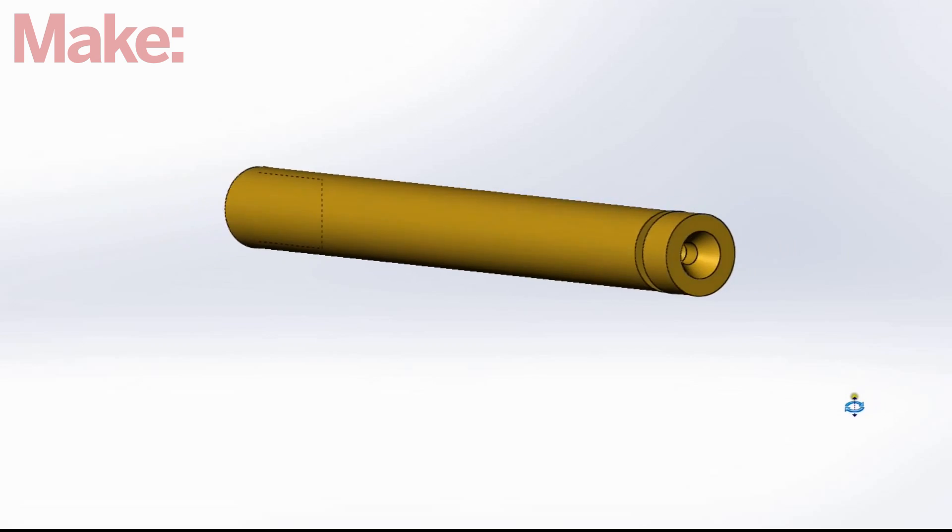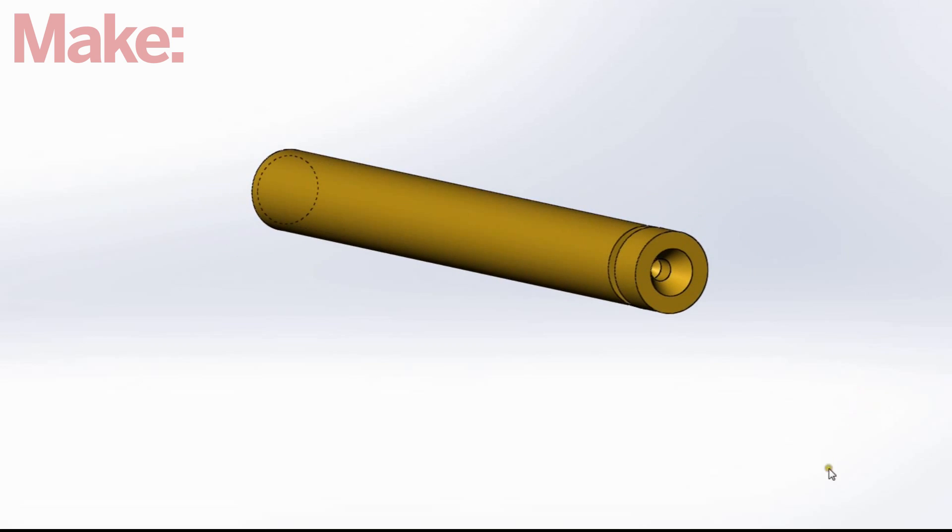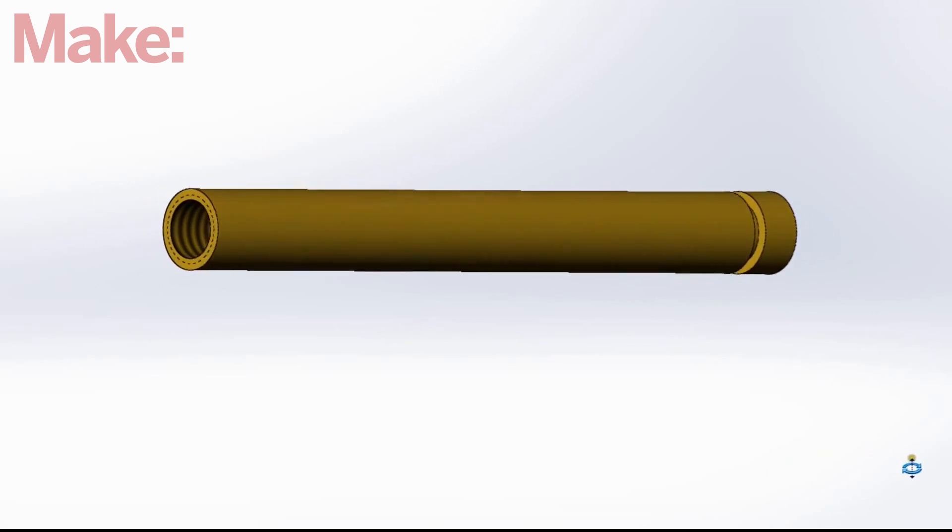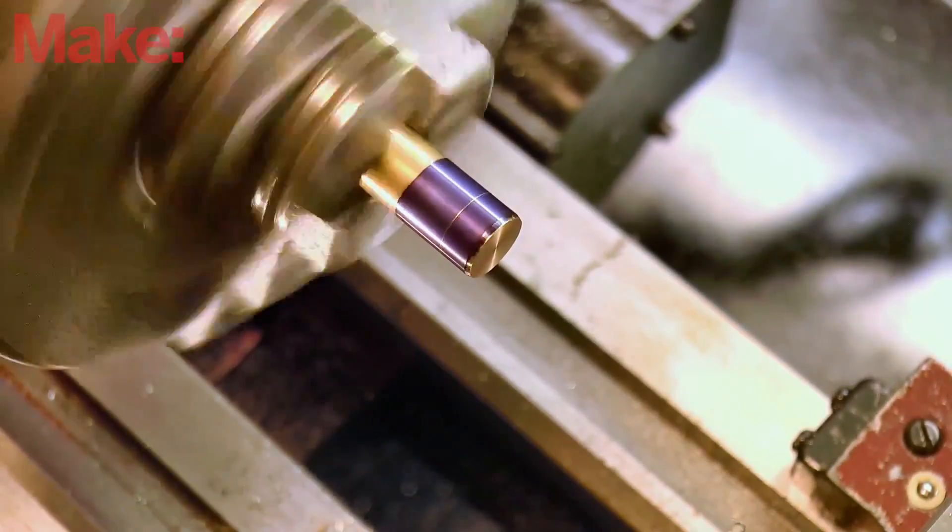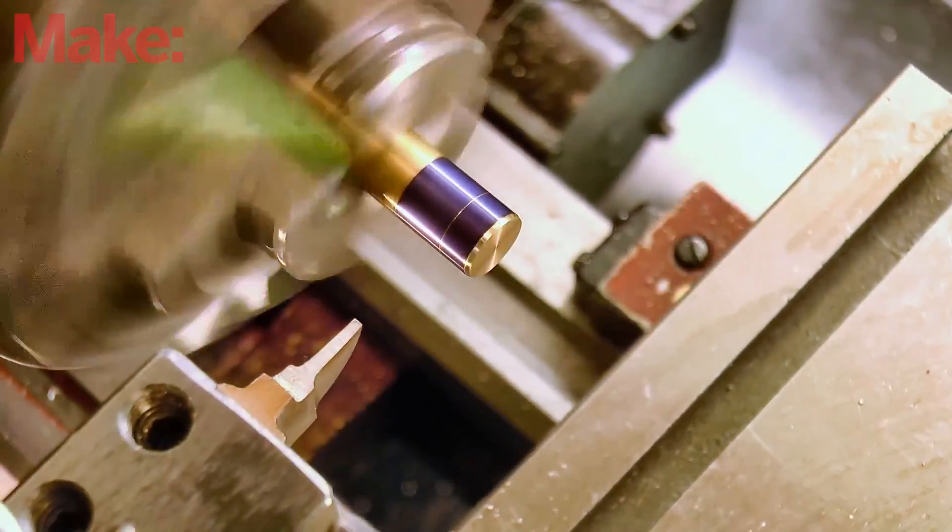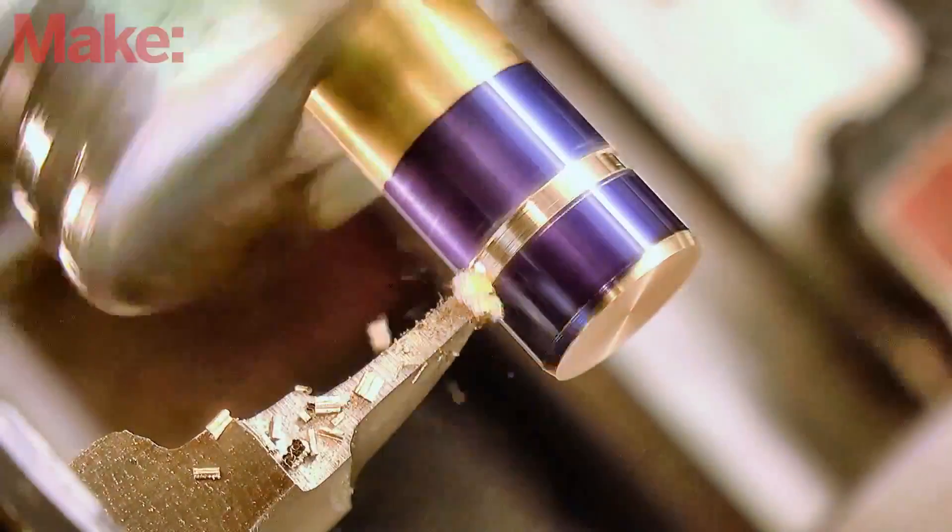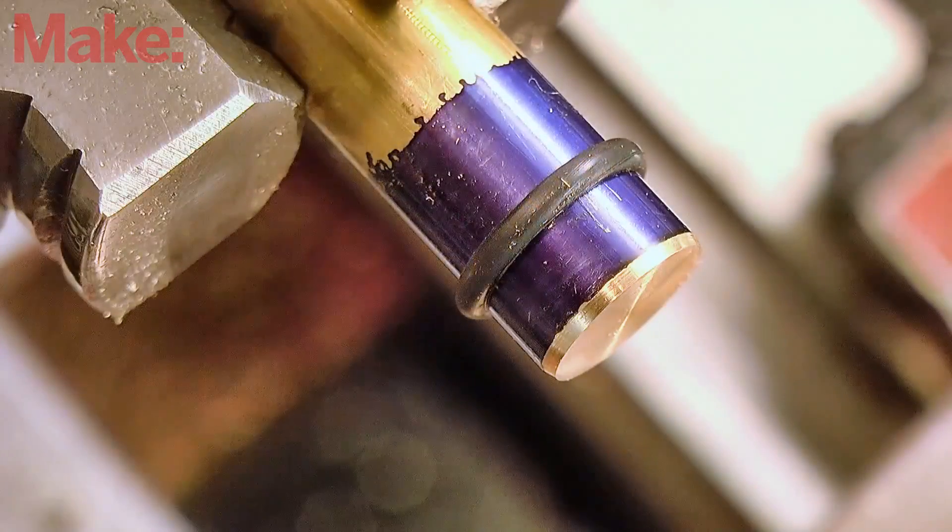Next up is the piston, and again we've got another trial and fit situation with an o-ring. I recommend a few test grooves first to figure out exactly what depth the groove needs to be to accommodate the o-ring that you've sourced. If you overshoot, just turn off the end and try again until it's right.